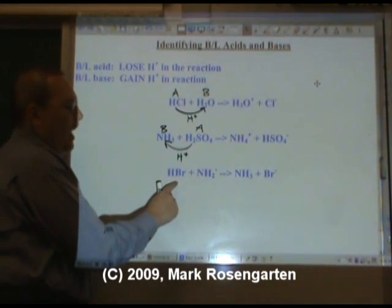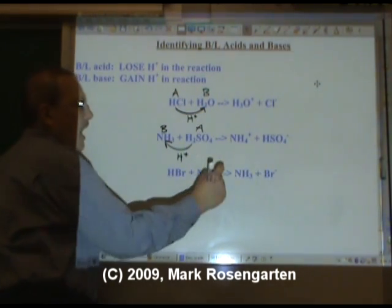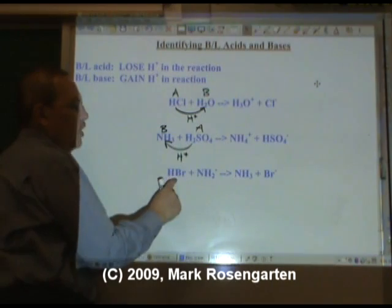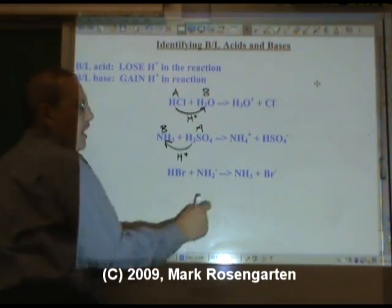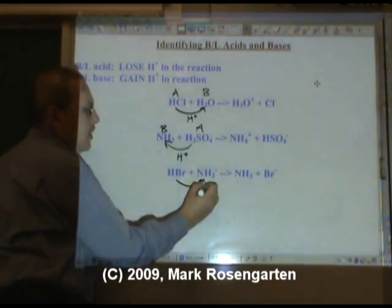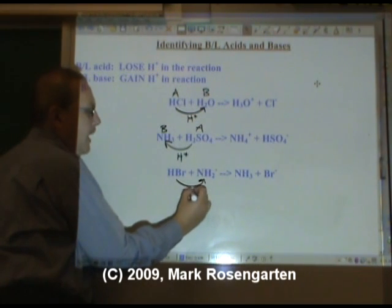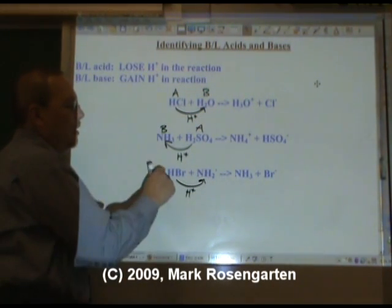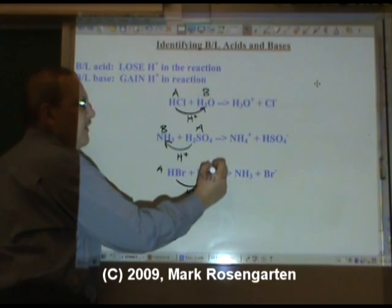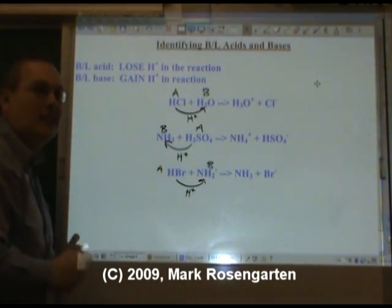In this reaction, the HBr becomes Br-minus, and NH2-minus becomes NH3. HBr lost a hydrogen and NH2-minus gained a hydrogen. So the hydrogen went from HBr to NH2-minus, making the HBr the Brønsted-Lowry acid and the NH2-minus the Brønsted-Lowry base.